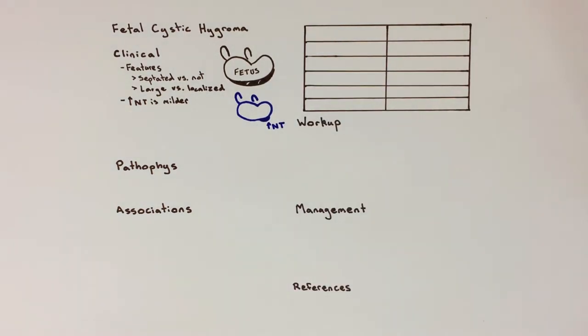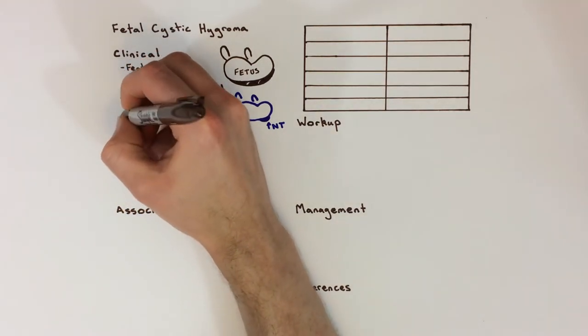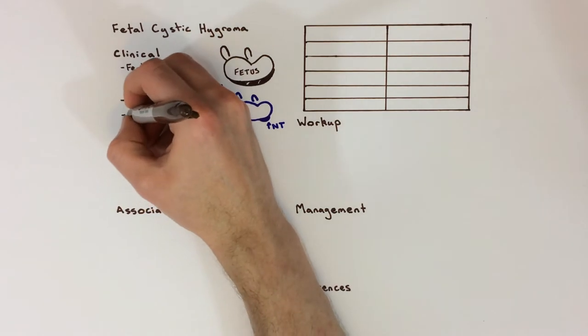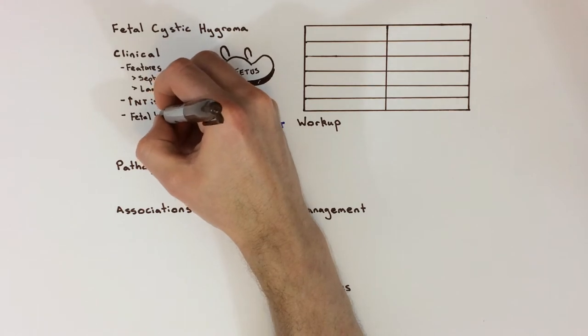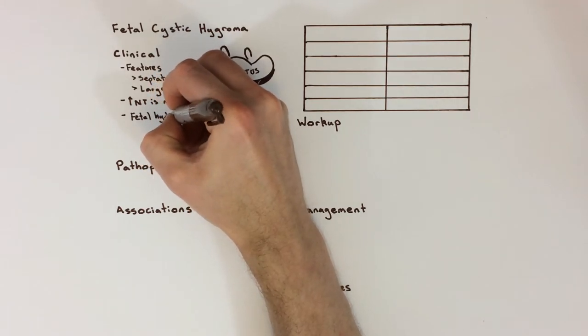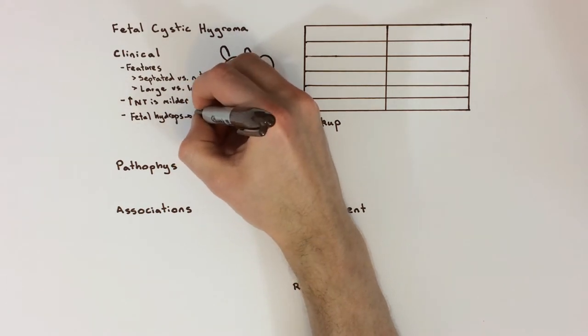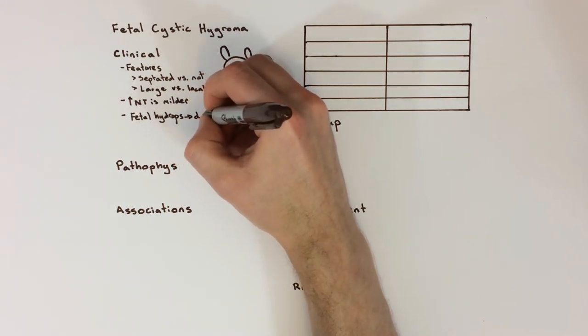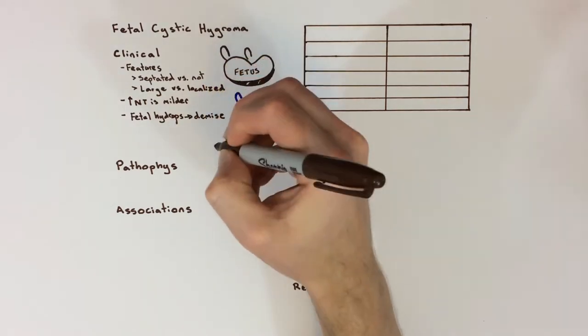Fetal death, usually called fetal demise, is more common if a cystic hygroma is accompanied by other anomalies like heart defects or by fetal hydrops, which is a swelling in multiple fetal body compartments, like the pleural, pericardial, or abdominal spaces. This is a type of non-immune hydrops, in contrast to immune hydrops which is caused by blood antigen incompatibility, for example when an Rh positive fetus is attacked by an Rh negative mother's immune system in utero.